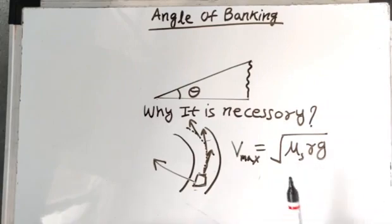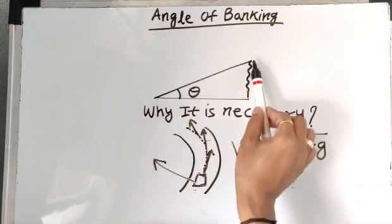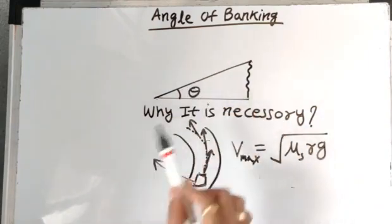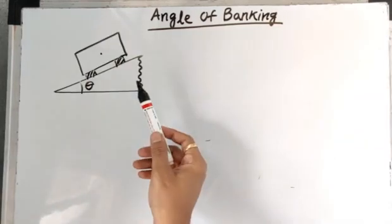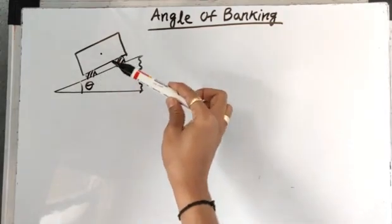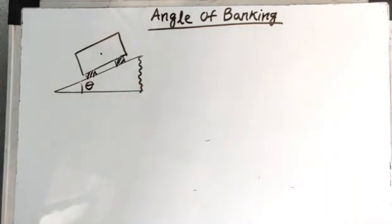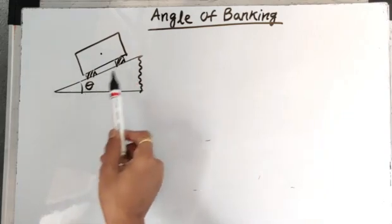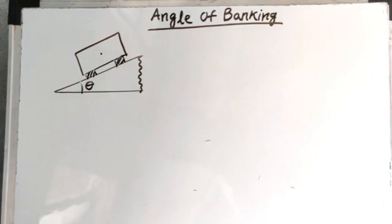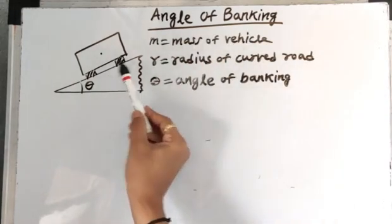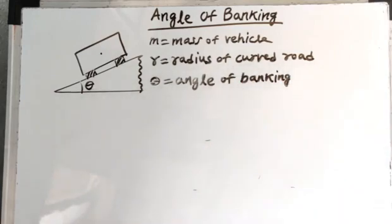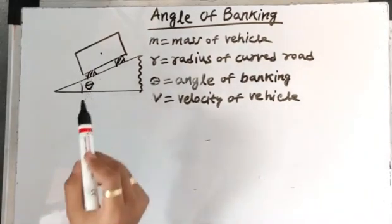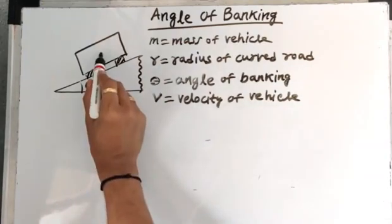For this purpose, angle of banking is the only solution, in which the outer edge of the road is inclined over the inner edge through a certain angle along the curve. As shown in this figure, we consider the vertical section of a vehicle on a curved banked road moving with velocity v. The road is banked at angle theta, with m as the mass of the vehicle, r as the radius of the curved road, theta as the angle of banking, and v as the velocity of the vehicle.